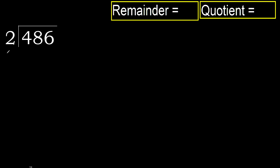486 divided by 2. 4 is not less, therefore work with 4. 2 multiplied by which number is nearest to 4, but not greater? 2 multiplied by 3 is 6.